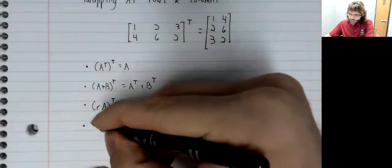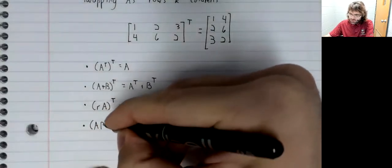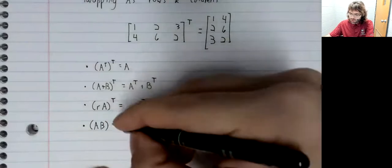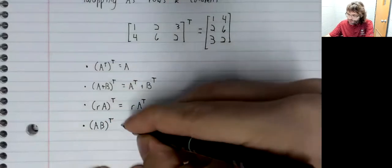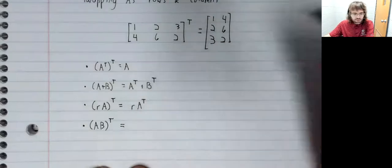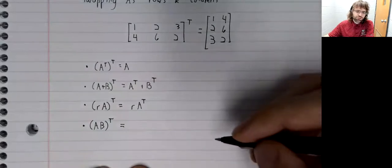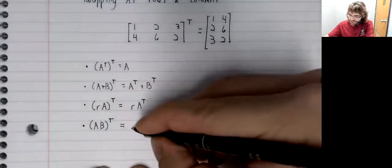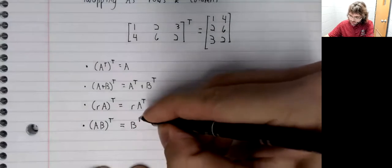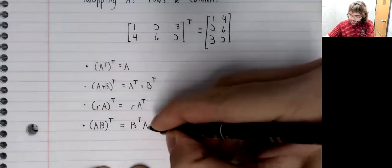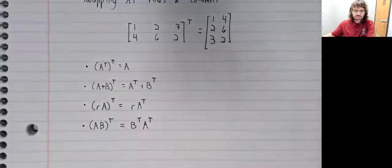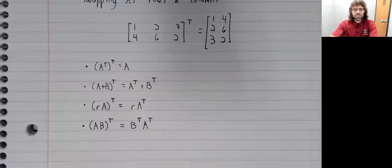And finally, and we're going to see something similar to this later in the course. The transpose of AB is the product of the transposes, but it's the product of the transposes in their reverse order. AB transpose is B transpose times A transpose.